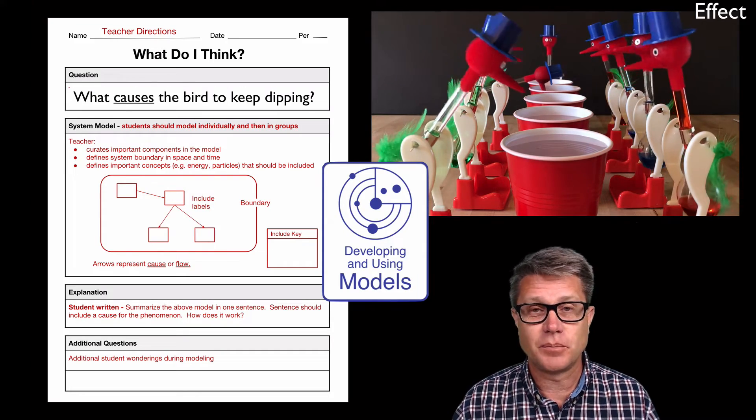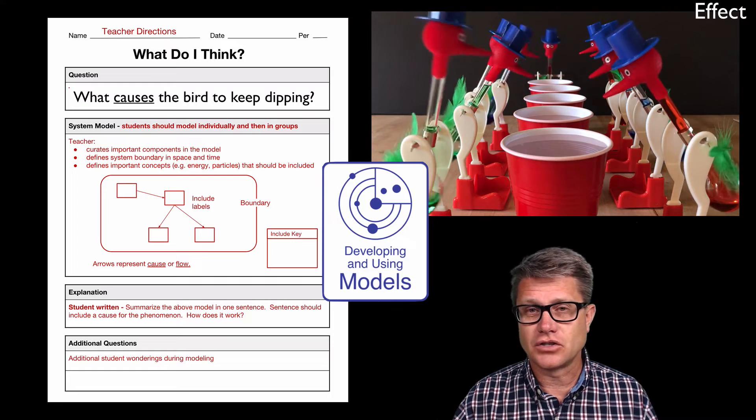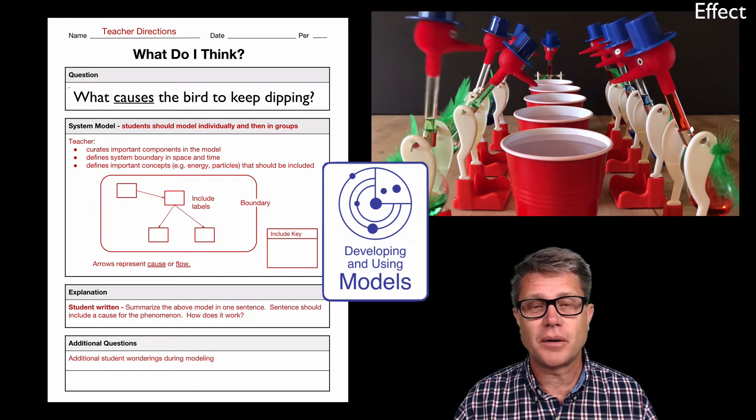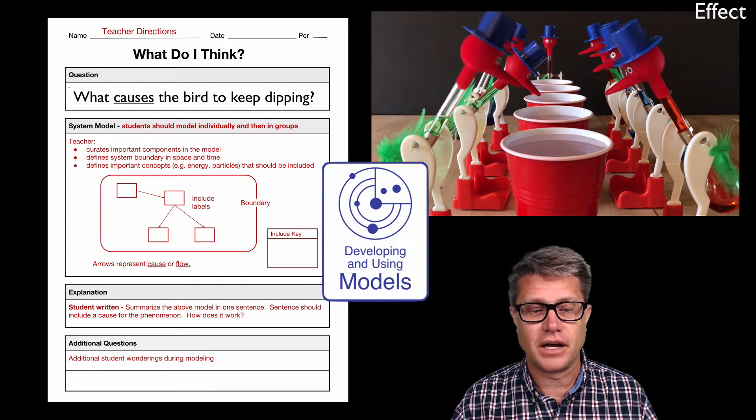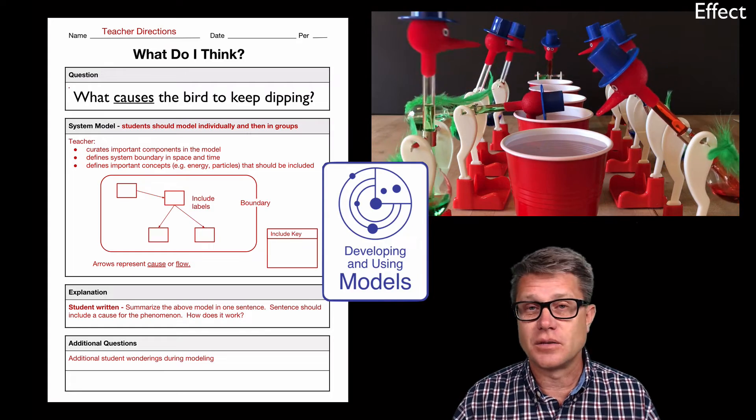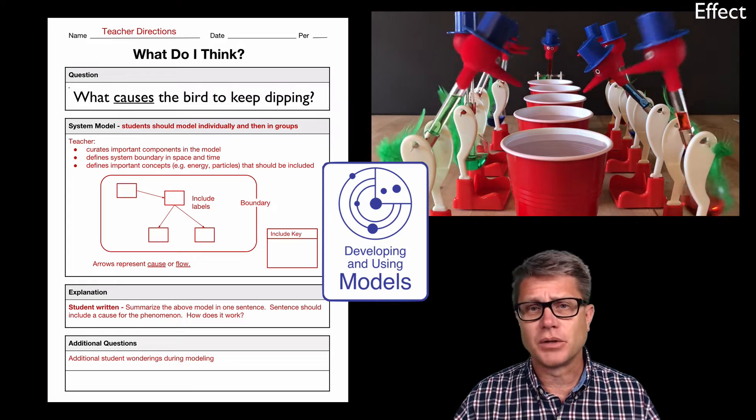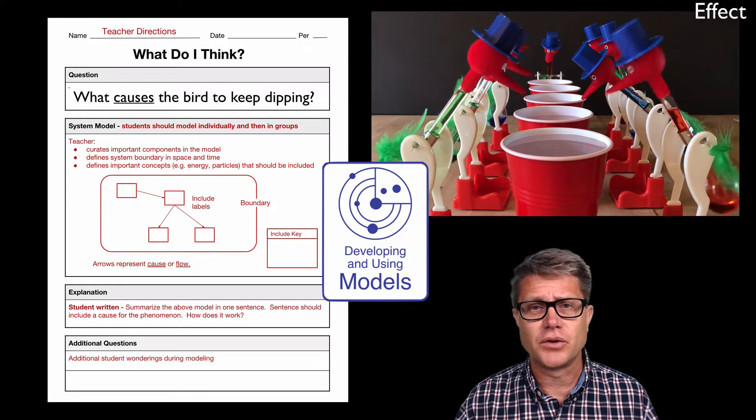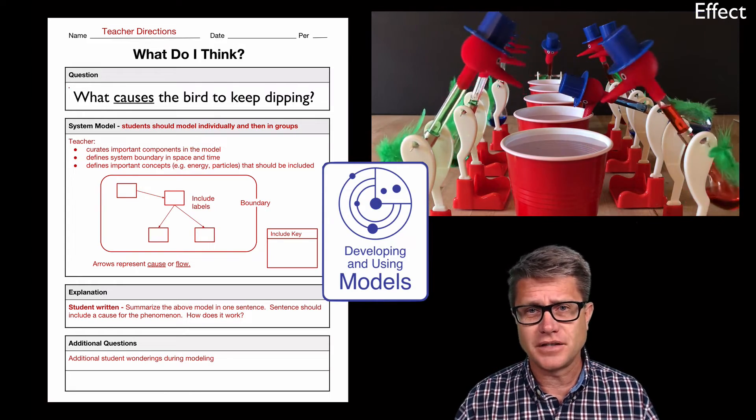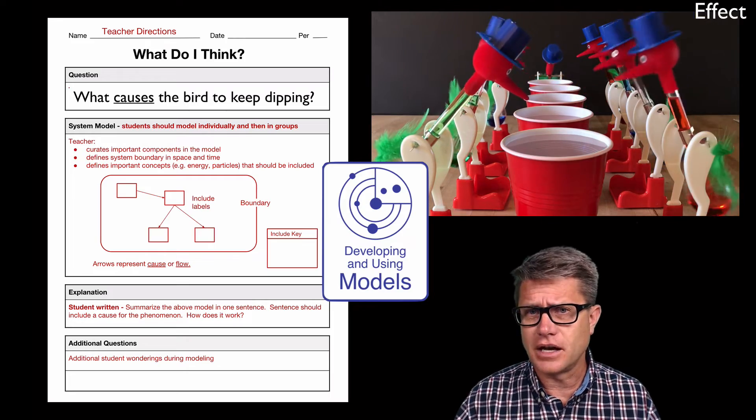And so let's say we're looking at these birds that are dipping. As kids are just getting started constructing these explanatory models, you probably want to give them the question that they're trying to answer. In this case, what causes the birds to keep dipping? Now we want them to create a model. You can think of this as an explanation, an explanatory model, or if you want to call it an explanatory hypothesis. It's essentially what they're thinking at this point.